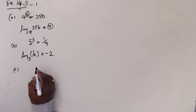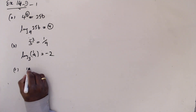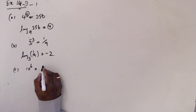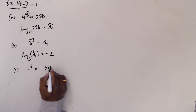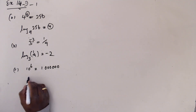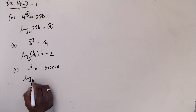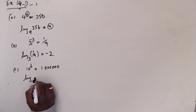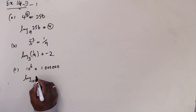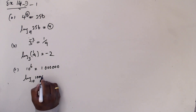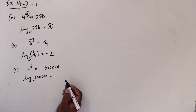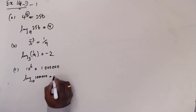And c: 10 to the power 6 equals 1,000,000. Now we can write the logarithm: log to base 10 of 1,000,000 is 6.